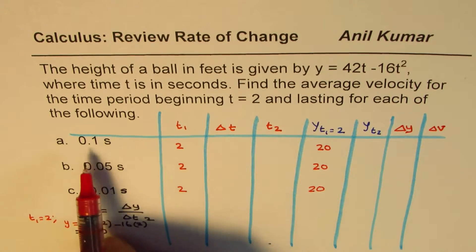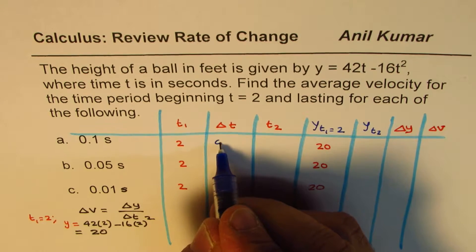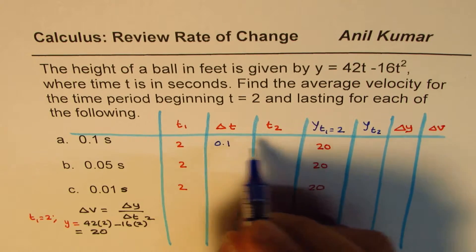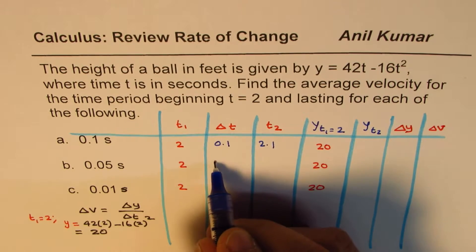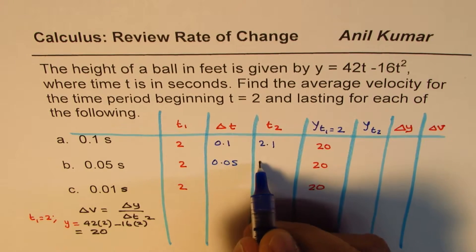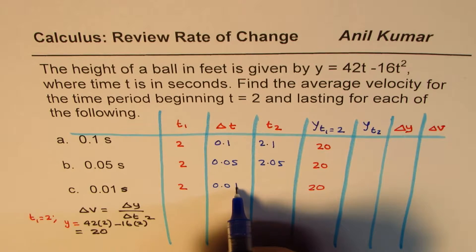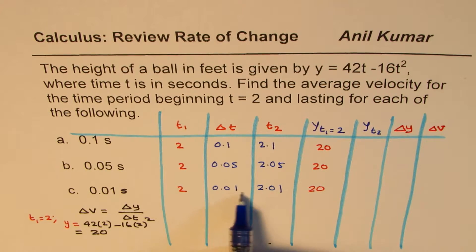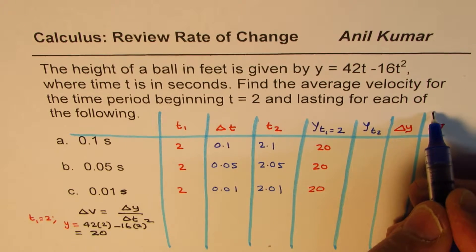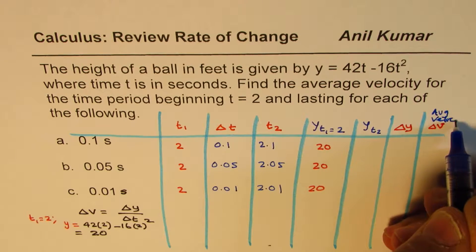In this question, the change in time is 0.1 seconds, so t2 will be 2.1. If the interval is 0.05, t2 will be 2.05. If it is 0.01 seconds, then t2 is 2.01. For each of those times, we need to figure out the average velocity.